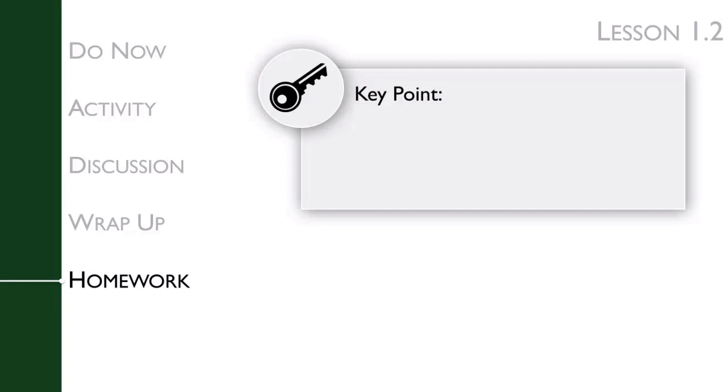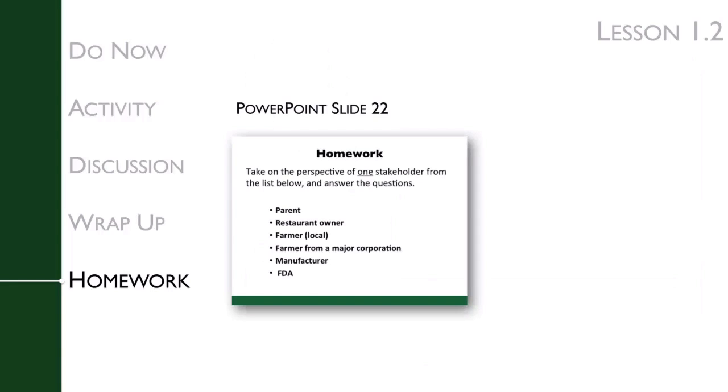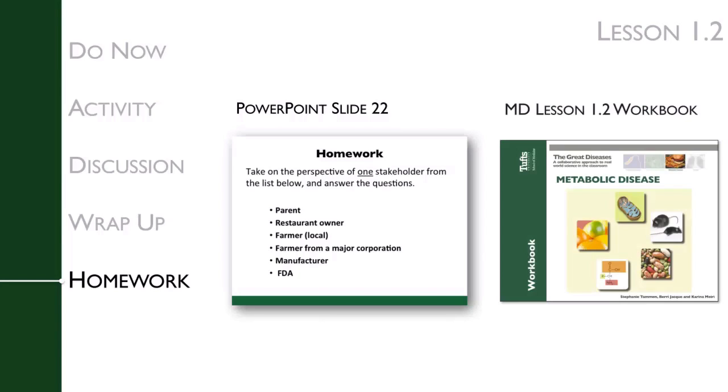The key point of the lesson's homework is to weigh the pros and cons of food additives. We will get there by using a worksheet. Students will assume the role of a stakeholder, like a parent, farmer, or food manufacturer, and answer questions about whether they approve or disapprove of certain food additives. Students can review this information in the student workbook.